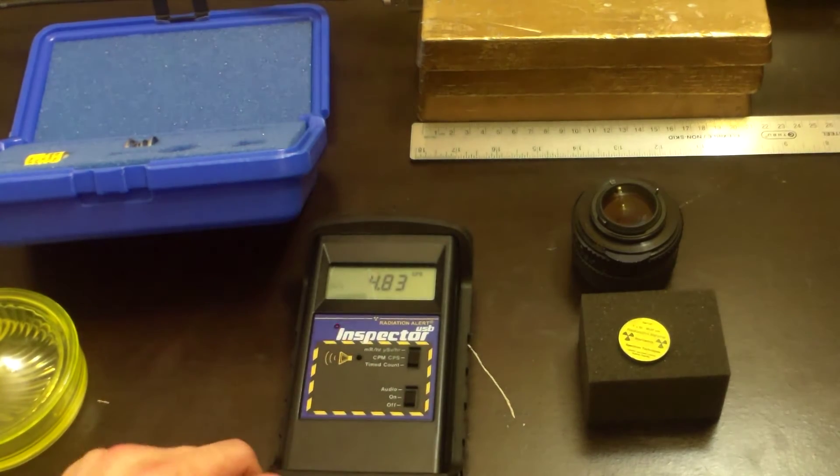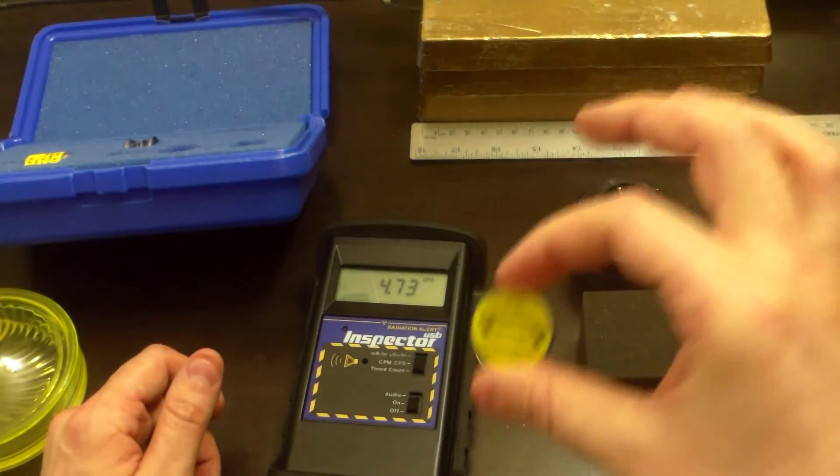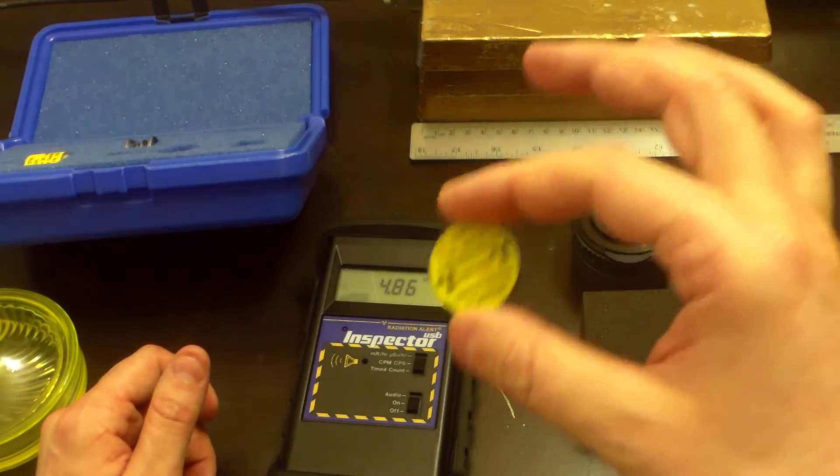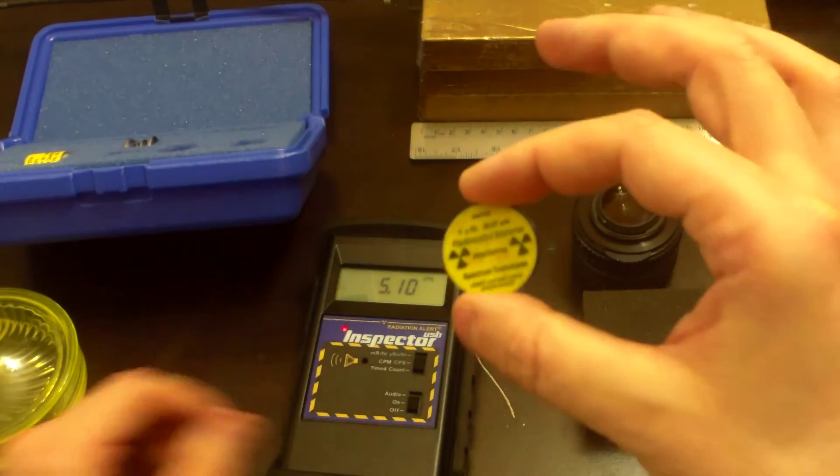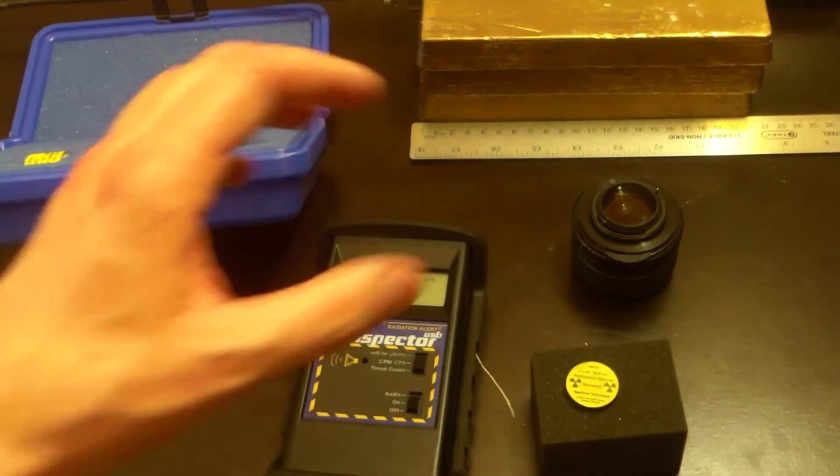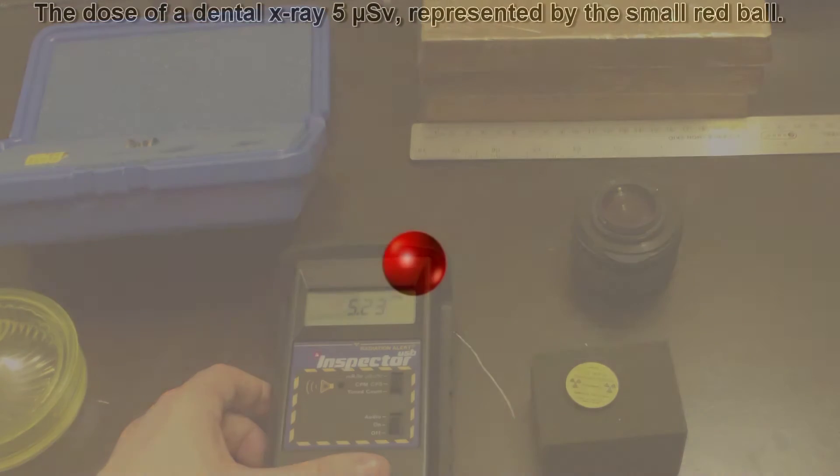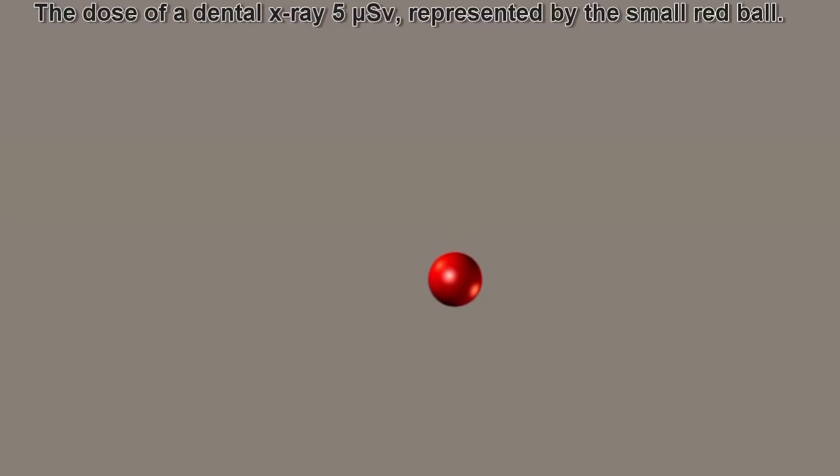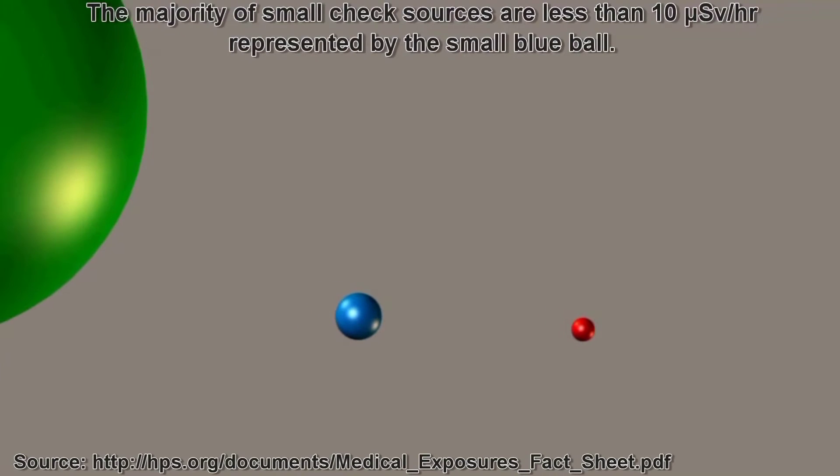So let's get a visual interpretation. I'm going to show you a ball that represents the size of this sample. And this sample is actually not 10 microsieverts per hour. This sample is actually like 8 or something. But we're just going to jack it up to 10 to make it simple. So we're going to actually increase the dose a little bit. And we're going to show this as a little tiny ball. And then we're going to show it next to a ball that's bigger that represents other sorts of things. The dose of a dental x-ray is about 5 microsieverts. That's represented by the red ball. However, the dose by the majority of my small check sources is about 10 microsieverts per hour or less. It's represented by the blue ball.